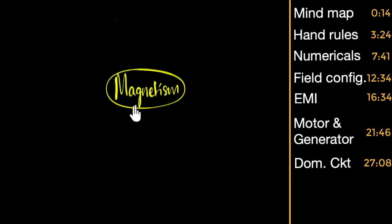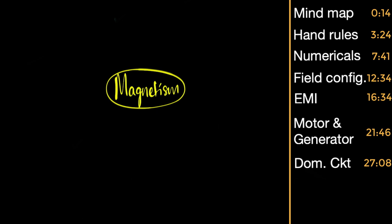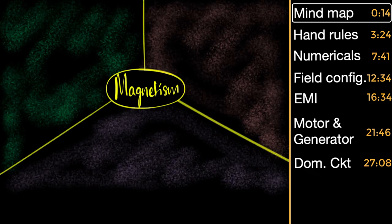Let's summarize important topics of magnetic effects of electric current, which in short I'm calling magnetism. On the right hand side you can see the index, so if you want to jump to any specific topic, feel free to do that. Let's begin with the mind map. I like to divide this entire chapter into three parts, based on three scientists and three discoveries.